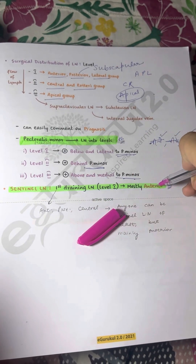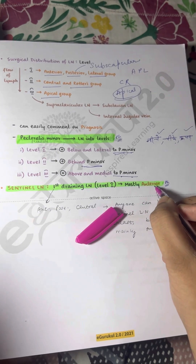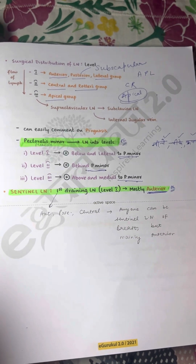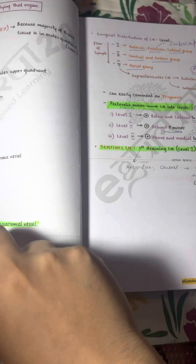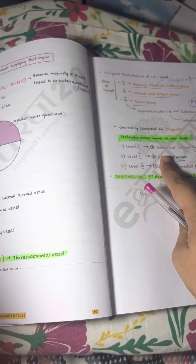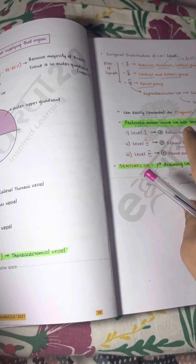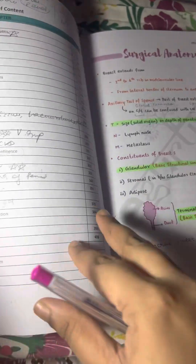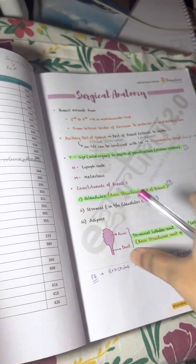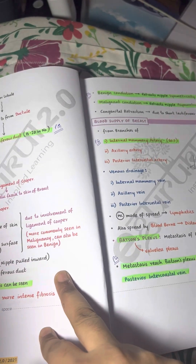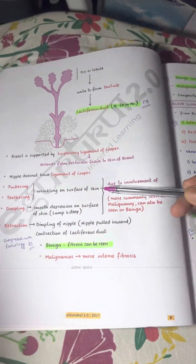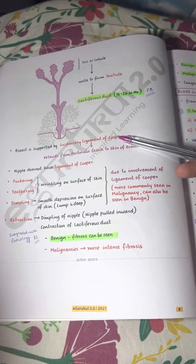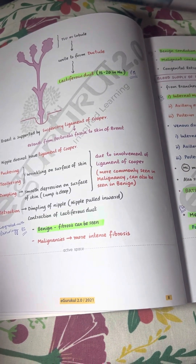The sentinel lymph node is the first draining lymph node, and is mostly the anterior group. This is a common long question in professional exams covering breast surgical anatomy. Key topics to know include the Rotter group, division of lymph node levels, extensions of the breast, blood and venous supply, and the modes of spread of breast cancer.